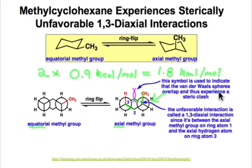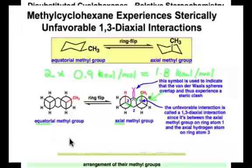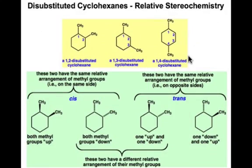If you look back to that conformation search we did in Marvin, that number isn't too far off — it's a rough estimate, but it's not too far off from the energy difference found for these two conformations. As we add substituents to the ring, we have other factors to consider: for example, what's the connectivity — is it 1-2, 1-3, or 1-4?